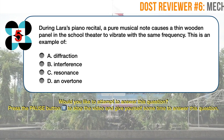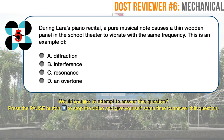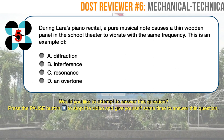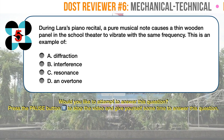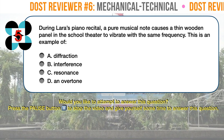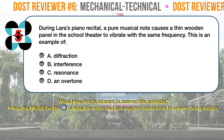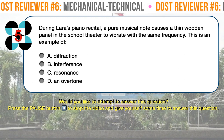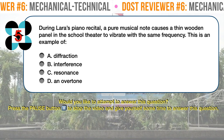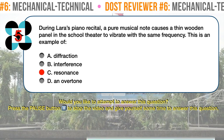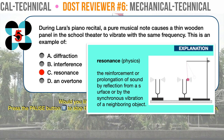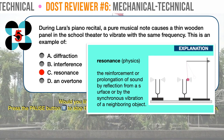Question number five. During Laura's piano recital, a pure musical note causes a thin wooden panel in the school theater to vibrate with the same frequency. This is an example of: A. Diffraction. B. Interference. C. Resonance. D. An overtone. The correct answer is C: resonance. Resonance happens when one object vibrating at the same natural frequency of a second object forces that second object into vibrational motion.